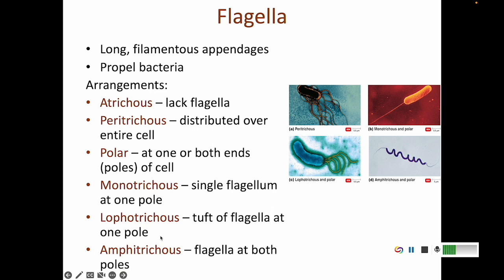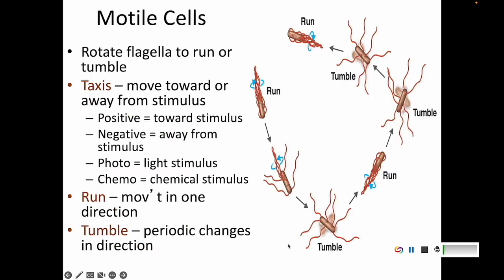Please be able to describe these flagella terms — you should be very comfortable with them. Flagella allow bacteria to move by twisting in a circle one way and then the other. This produces run and tumble movement: a run is movement in one direction, and a tumble is when the cell shakes itself to reorient. This movement is called taxis. Positive taxis is moving towards a stimulus like food or light; negative taxis is moving away from something harmful, like an antibiotic.